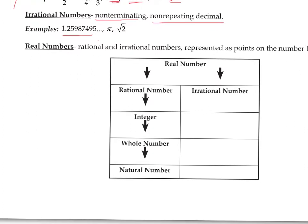Here's a nice chart that outlines the real numbers and how they break down into different sets. Real numbers is the name for the big set of numbers that you can graph on a number line. They break into two mutually exclusive sets: rational numbers, which can be written as fractions, and irrational numbers, which have non-terminating, non-repeating decimals. If a number is irrational, it can't fall into any of the rational subsets. The rational numbers break down to integers, integers break down to whole numbers, and inside whole numbers is the smallest set — natural numbers.